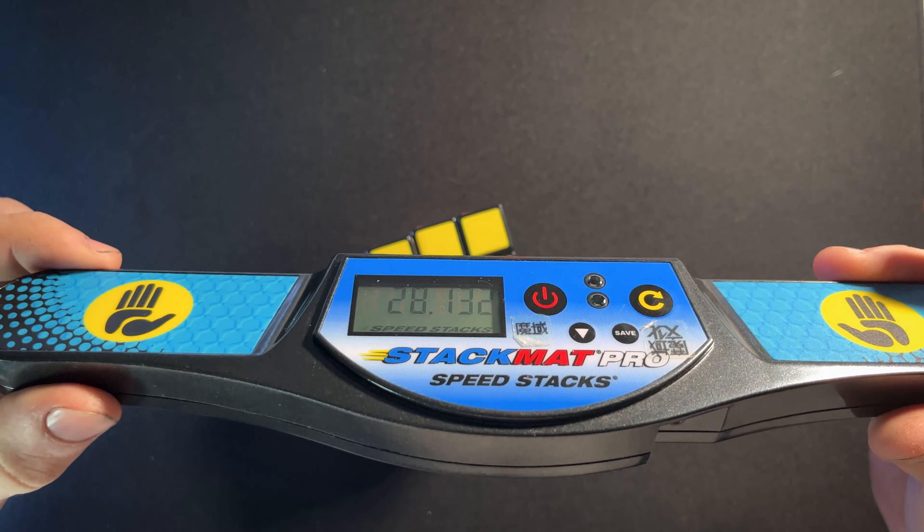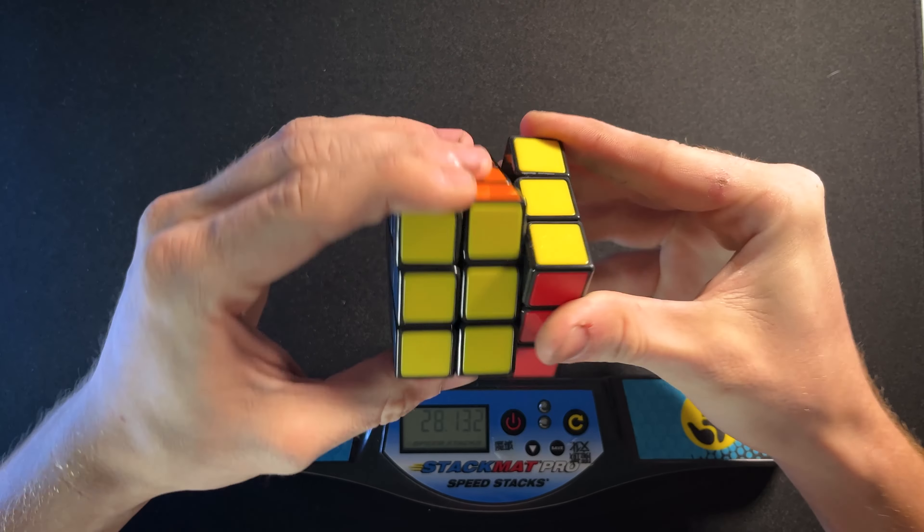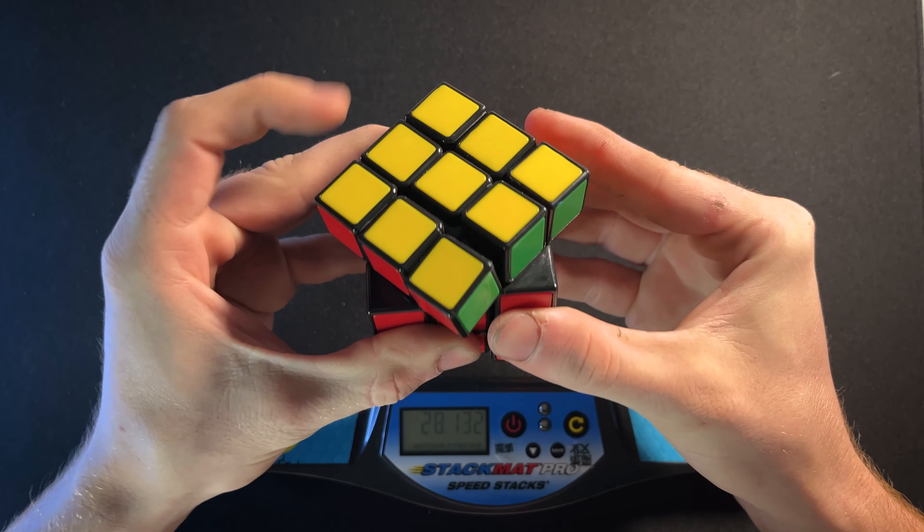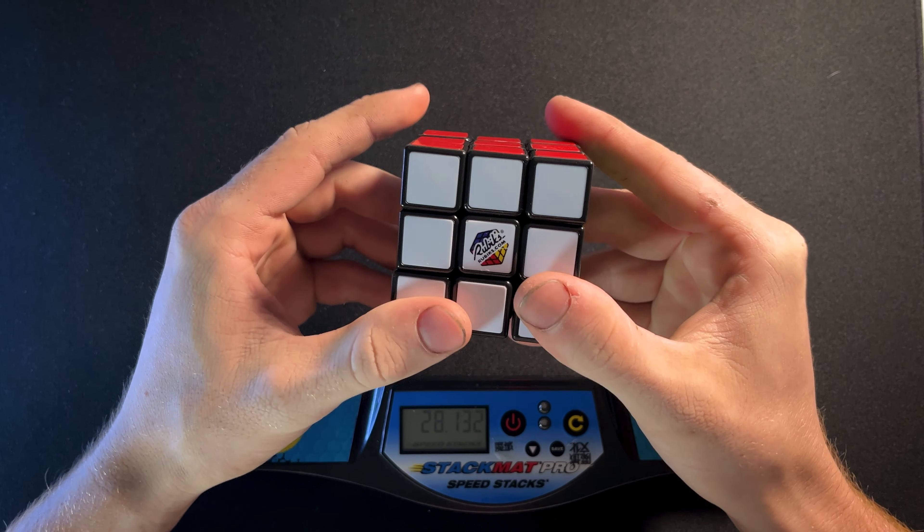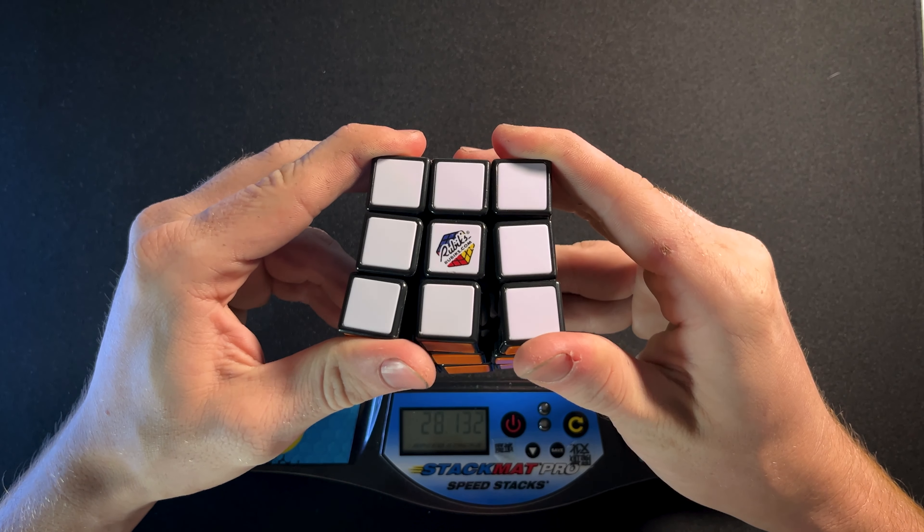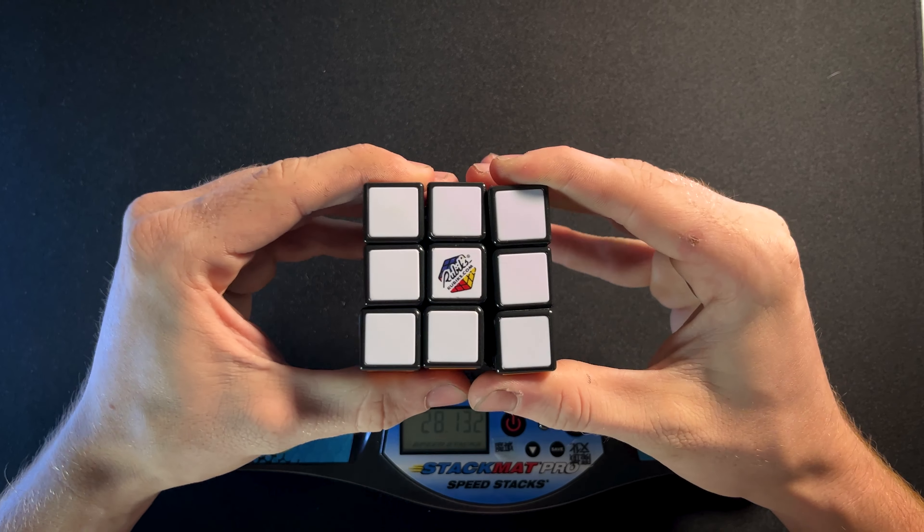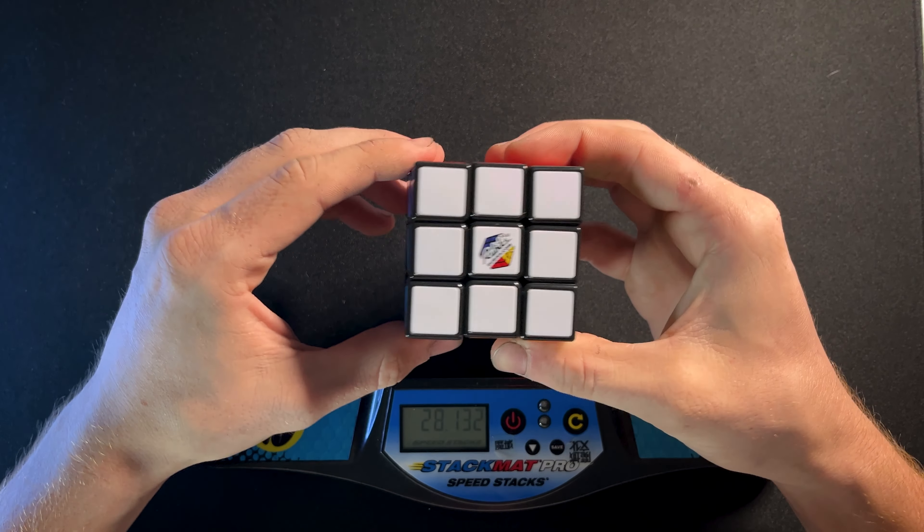All right we got a sub 30, 28 seconds. It's so clunky and it actually doesn't corner cut that terrible, but it's not great. I've also changed this cube a little bit like I've lubed it and cut some in the corner so it's like I've modified it but it's still the same cube you can buy.